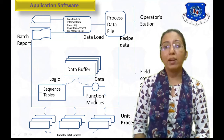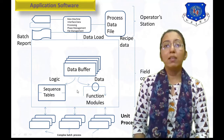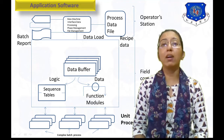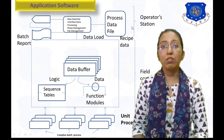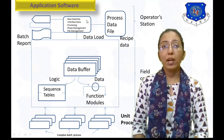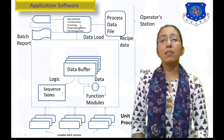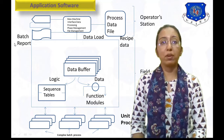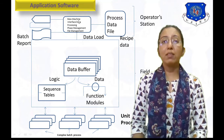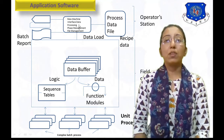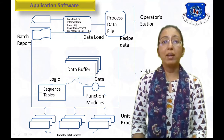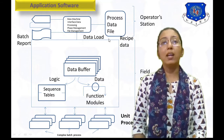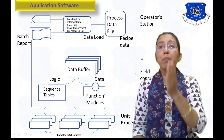From the Data Buffer, data is sent as signals to the Sequence Table and Function Module. The Sequence Table is for logic, and the Function Module is for data transferring. Then, from the Field Operators Station, data is sent to the Operators Station. In the Operators Station, data is loaded, then sent to the Process Data File and Batch Report. This section includes the Main Machine Interface, Processing, Plant Management, and File Management — all functions are completed here. This is the block diagram of Application Software.